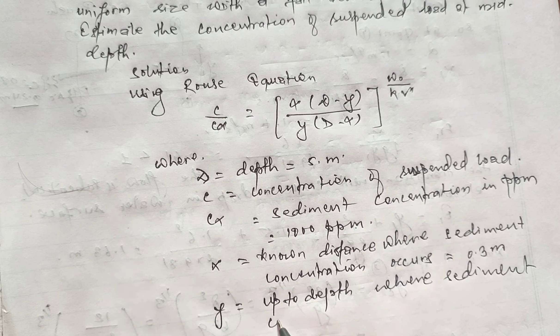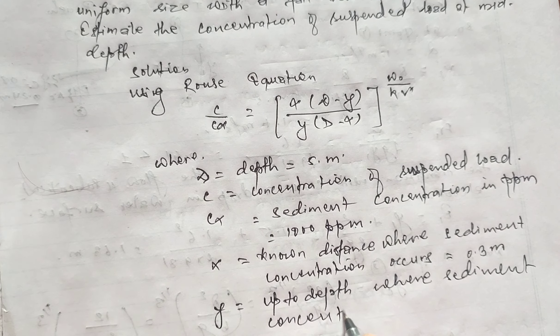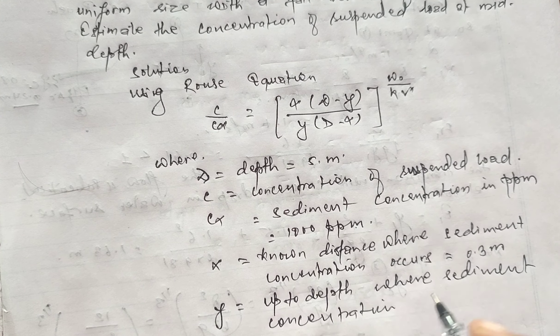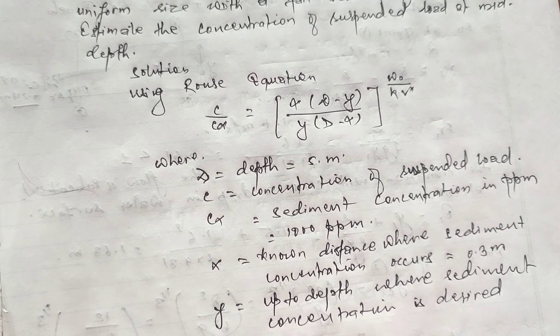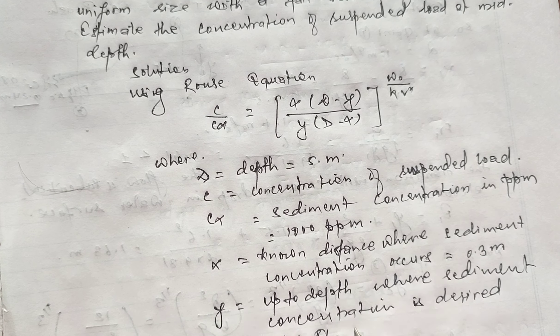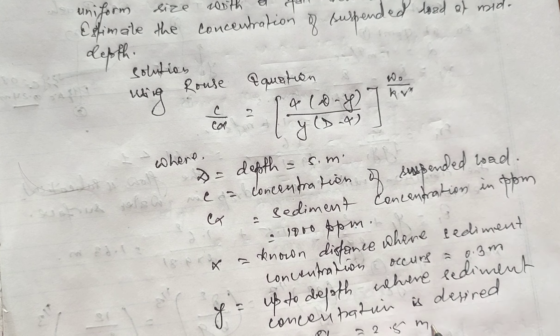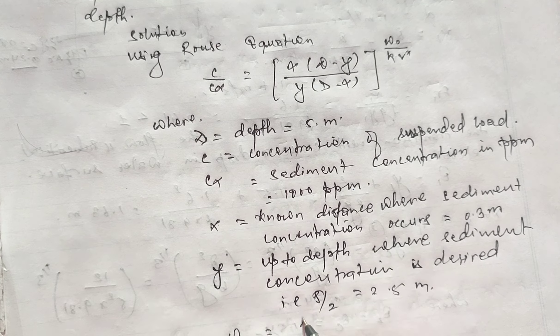where sediment concentration is desired, that is 5 by 2 equals 2.5 meter. ω₀ equals fall velocity...